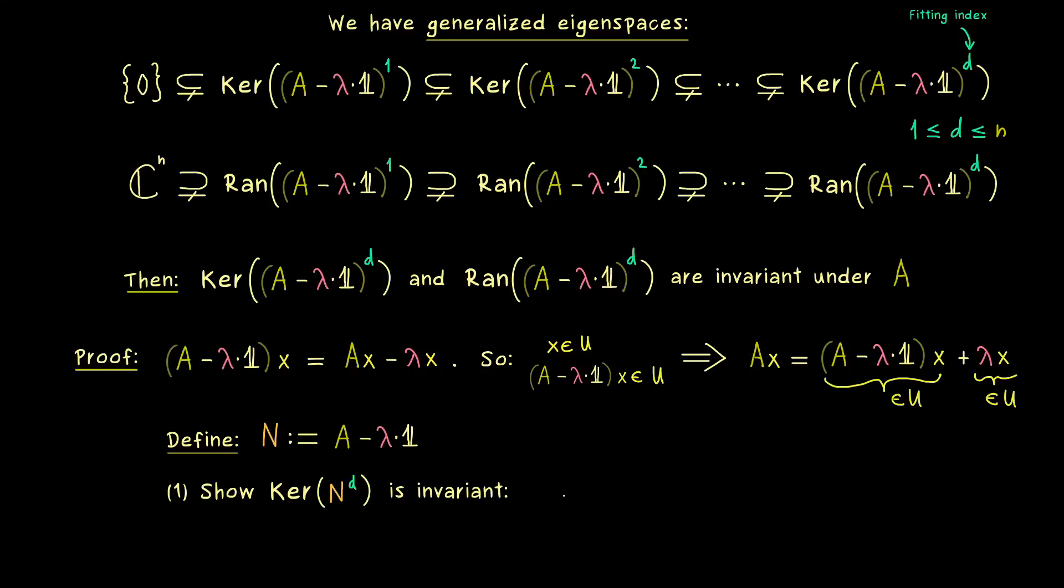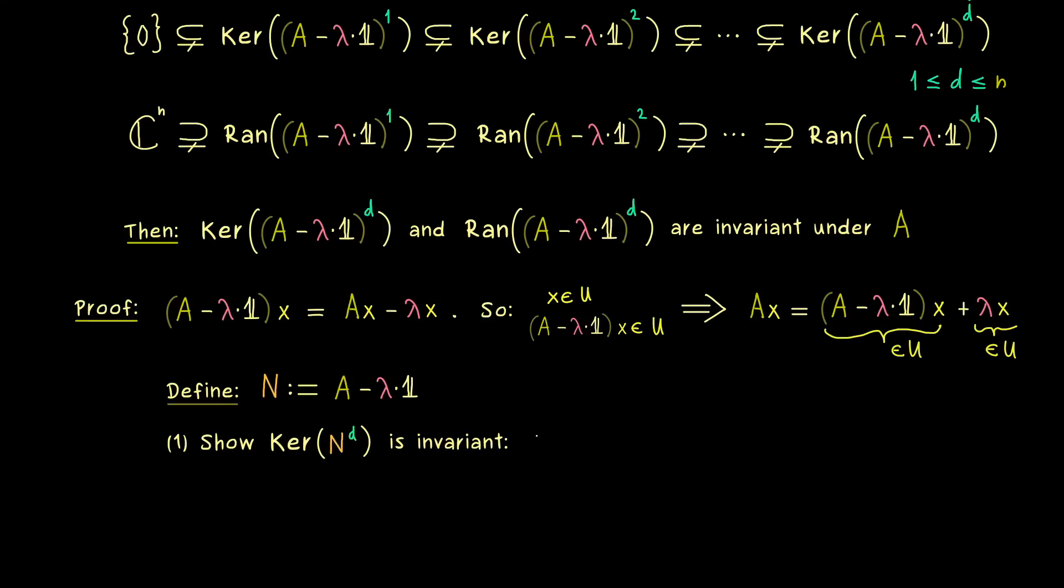So the first thing we show here is that our kernel of N to the power d is invariant under N. So the only thing we have to do here is to take an element x from this kernel, and then we apply the matrix N and check if the result is still in this kernel. Hence, applying N to the power d to Nx should give us the zero vector. And now the question is simply, do we immediately get it? And indeed we do.